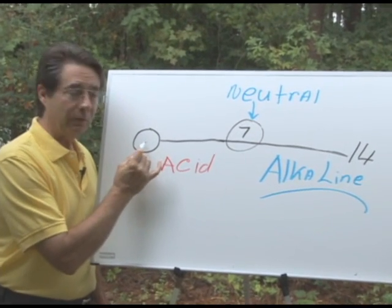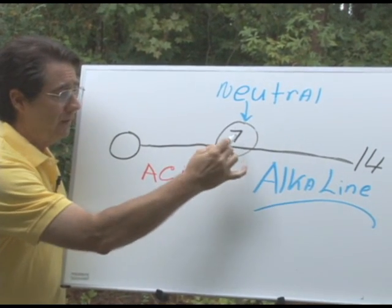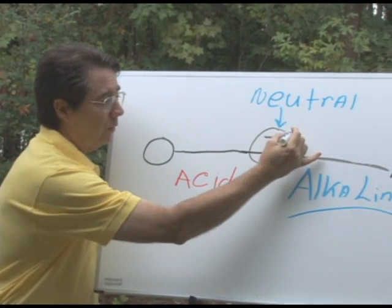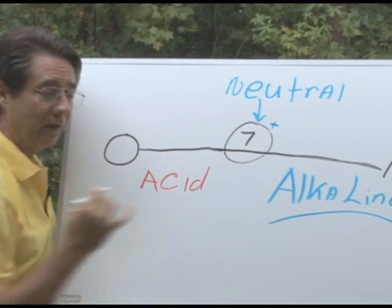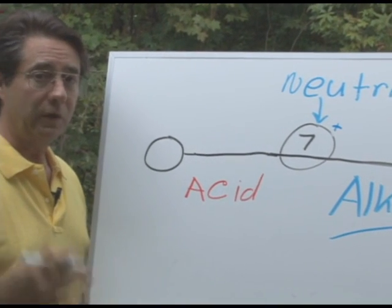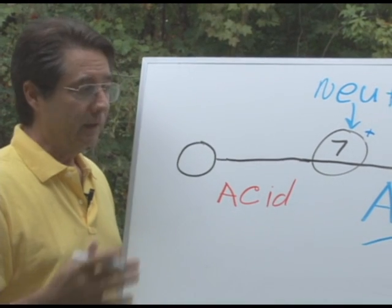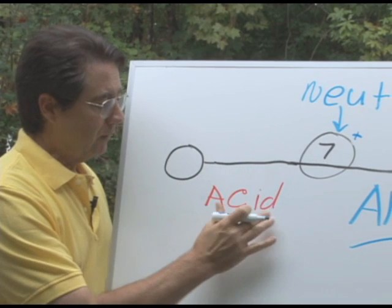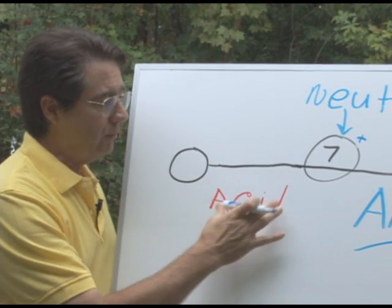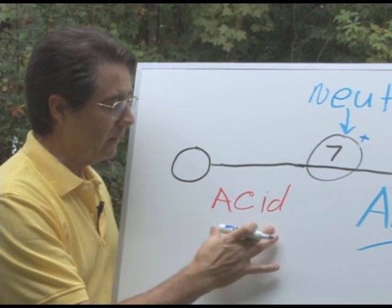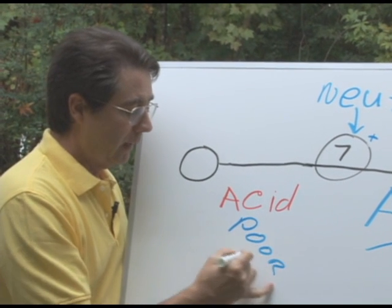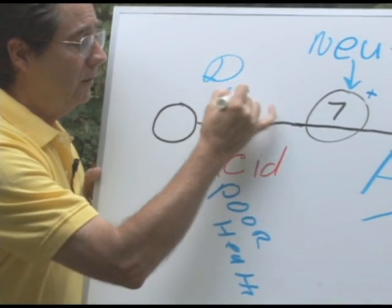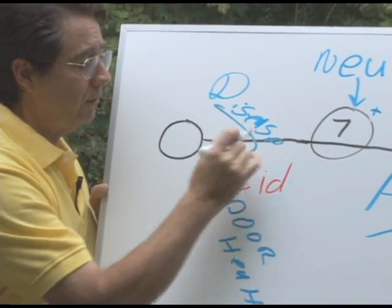The pH scale goes from 0 to 14, with the number 7 being in the middle as neutral. Now, where the body wants to be — the body wants to be 7 or slightly above. In other words, our bodies want to be slightly alkaline. On this side of the scale, we have the acid side. Everything on the acid side of the scale is poor health — this is where you find poor health, disease, all of that.